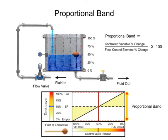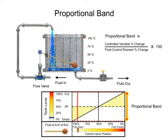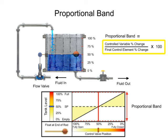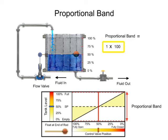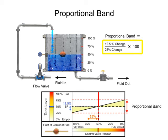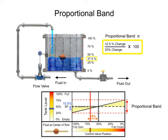The width of the proportional band determines how much of a controlled variable change is required to cause the final control element to move by a determined amount. By placing the float on the end of the rod, the fluid level has to change 100% to cause the final control element to change 100%. By placing the float at the center of the rod, the fluid level has to change 12.5% to cause the final control element to change 25%. The width of the proportional band is reduced by half.